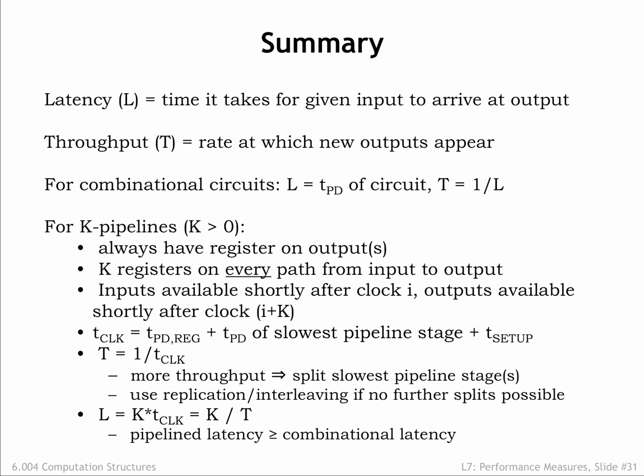We introduced a systematic strategy for designing k-pipelines where there is a register on the outputs of each stage, and there are exactly k registers on every path from input to output. The period of the system clock, t-clock, is determined by the propagation delay of the slowest pipeline stage. The throughput of a pipeline system is 1 over t-clock, and its latency is just k times t-clock.